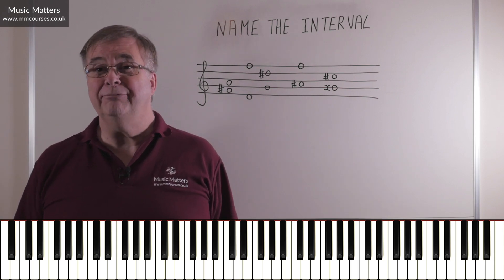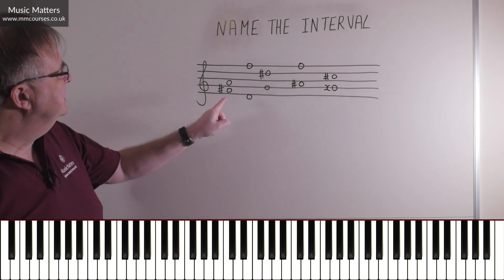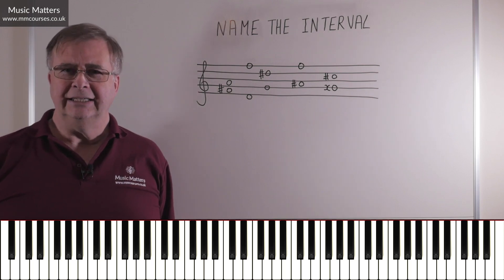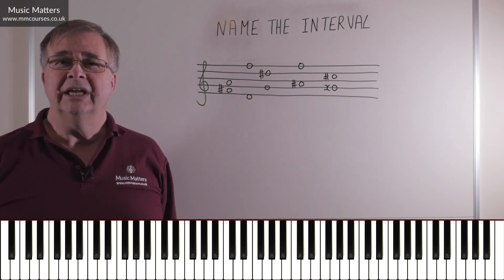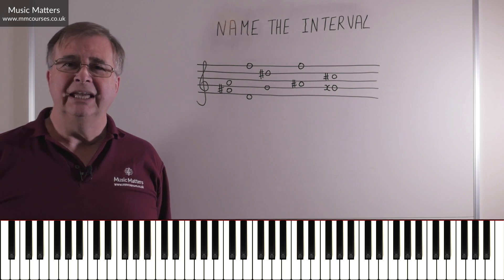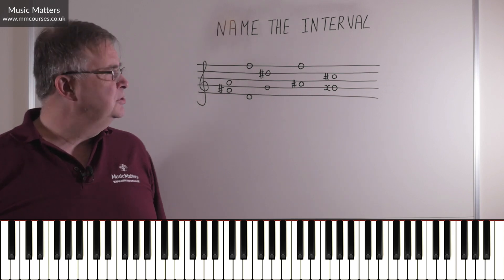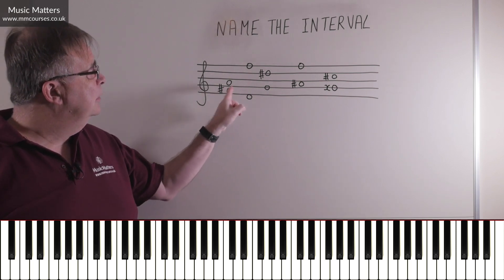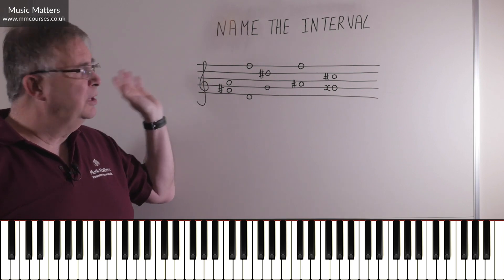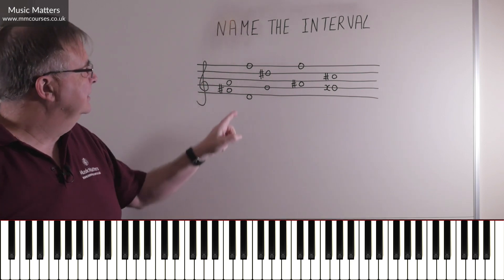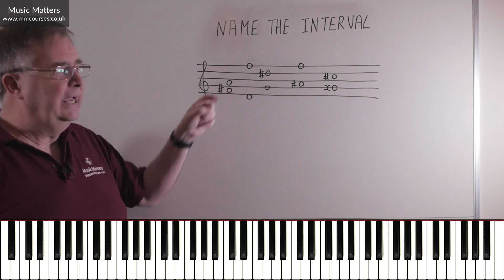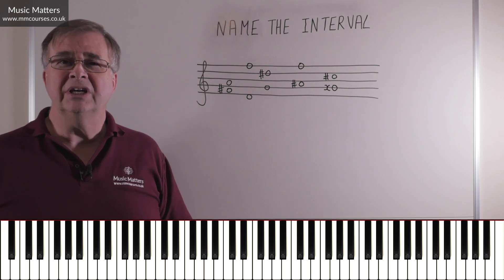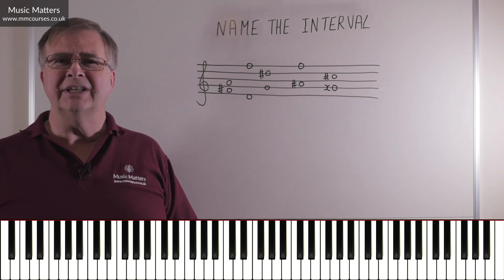Let's have a look at the first interval. The lower note is F-sharp, and the upper note is A. The first thing to do is work out the number of the interval — the distance between F-sharp and A. If you're not sure how to do this, you call the lower note number one and count up. Don't worry about F-sharp, it's F-something, and we're going F, G, A — so this is a third.